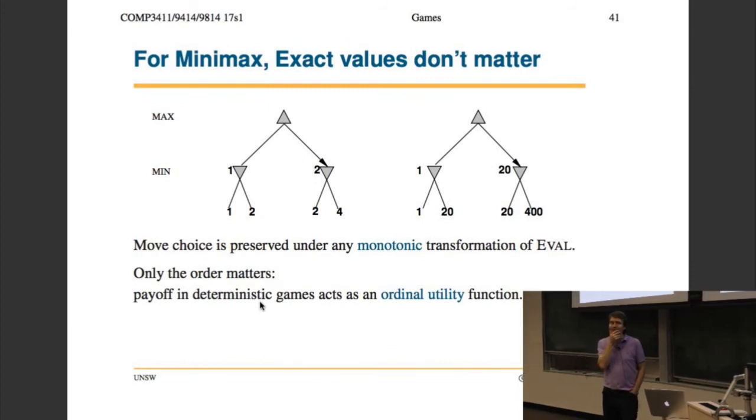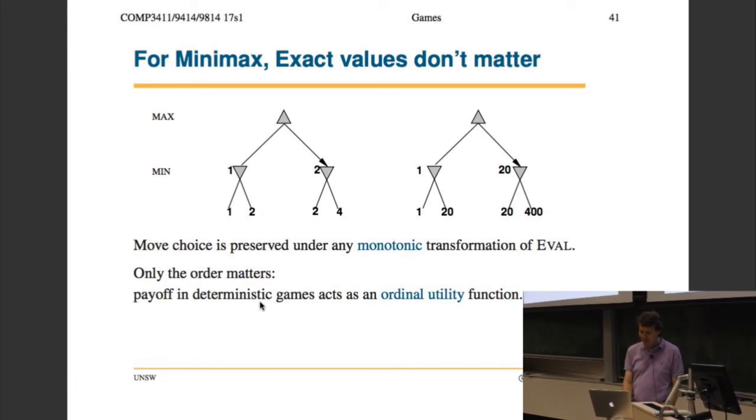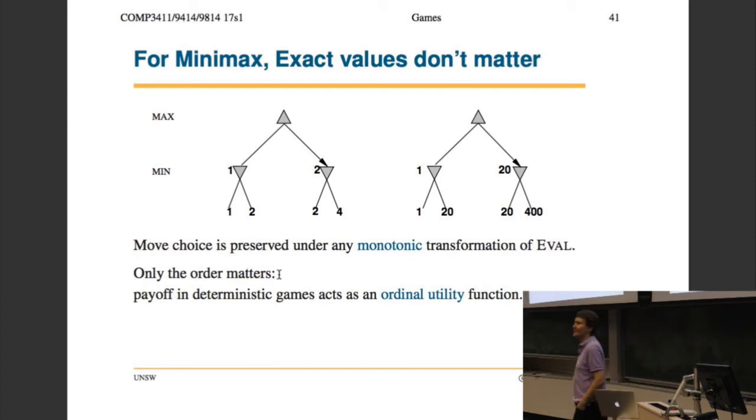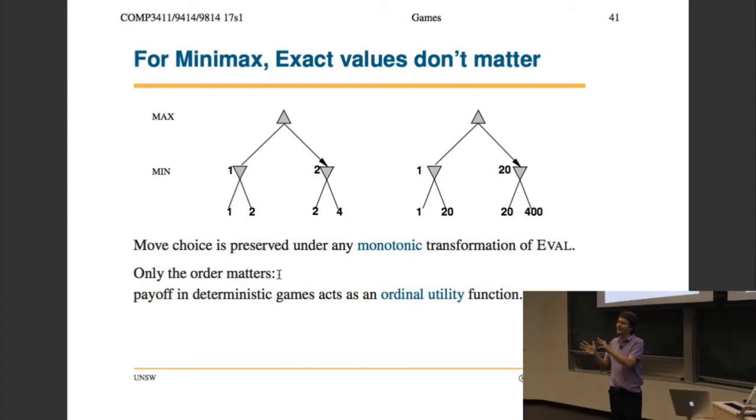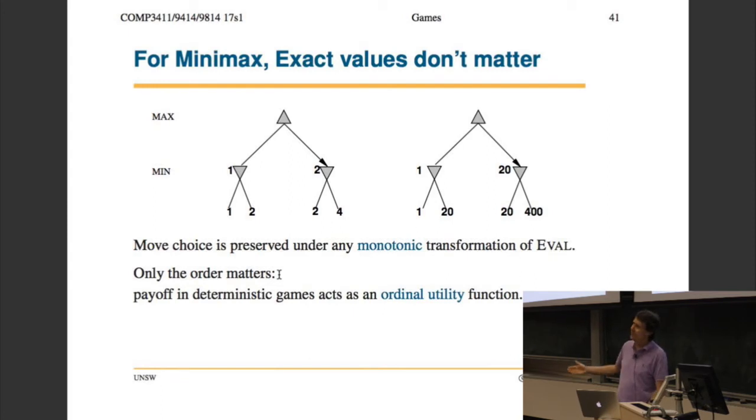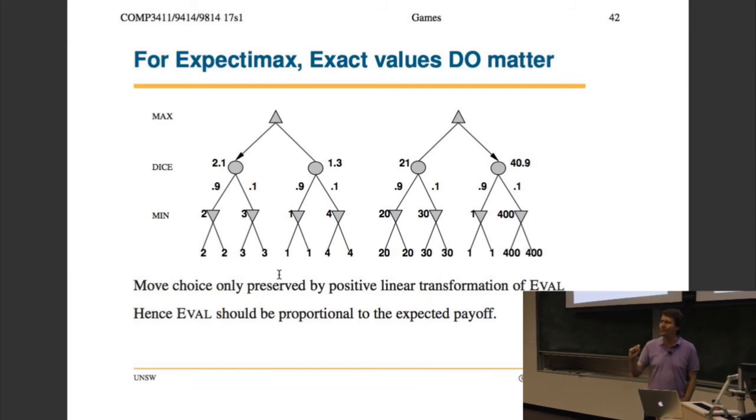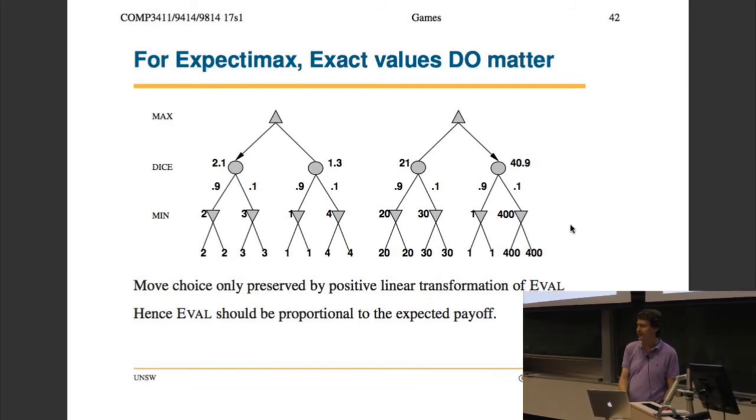The other point, and this is a bit of a subtle point, with minimax, all that matters is the ordering of the positions, whether one position is preferred over another. So if I had three final positions which I evaluated as 1, 2, and 4, but then I changed my evaluation so that it's 120 and 400, minimax will actually come back with the same answer. Because as long as any two positions, which one you prefer over the other, as long as that's preserved, that's all that minimax cares about, is really the ordering, not the actual numerical values. But when we do expectimax, it does matter. We need an actual value because we want to average the actual values.